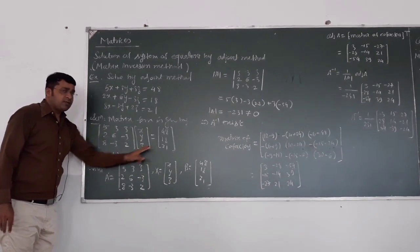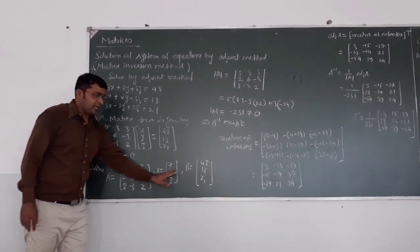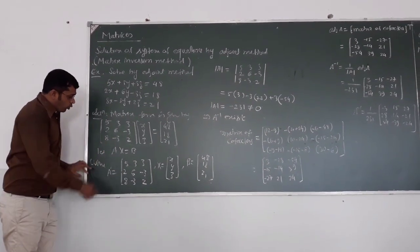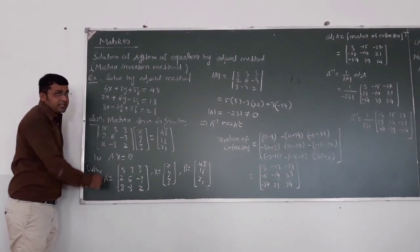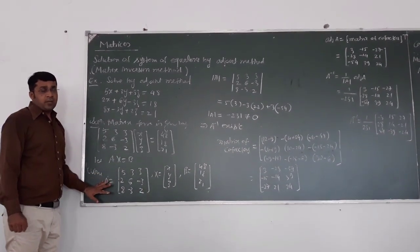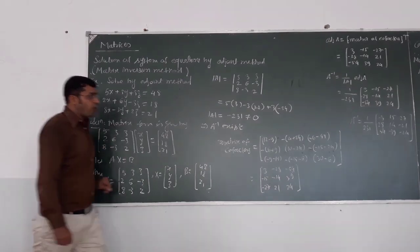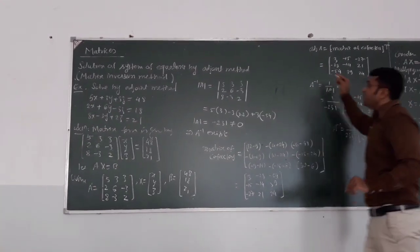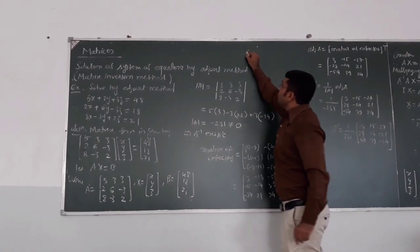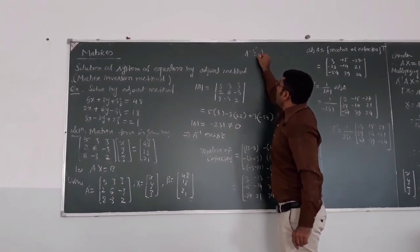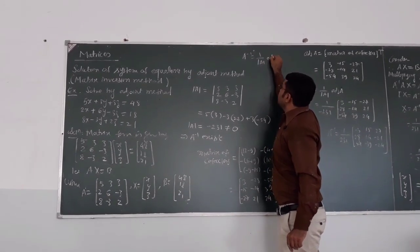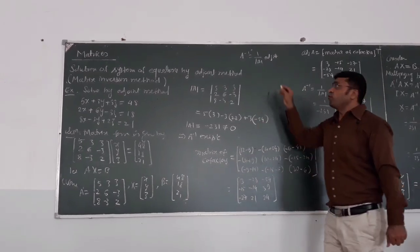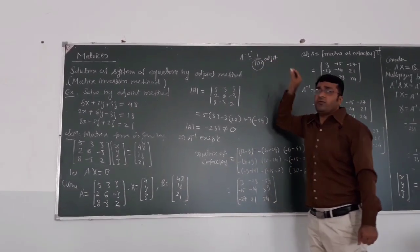For convenience, I denote the coefficient matrix as A, the unknown vector as X, and the right-hand side as B, giving us AX = B. Next, we find the inverse of matrix A by the adjoint method. The formula is: A inverse equals 1 over determinant of A, multiplied by adjoint of A.